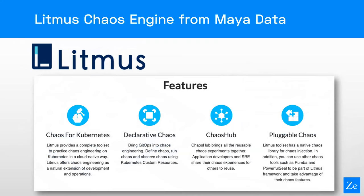Brian did a great job describing Litmus, so I won't go into too much detail. Things I really liked, especially for the demo: the declarative nature — everything is configured by YAML deployed into your Kubernetes cluster, making it repeatable and easy to have a bank of configurations you can run repeatedly the same way every time. Also it doesn't require third-party components. Some other tools require you to set up a separate server to coordinate the chaos engines, which is extra infrastructure to manage. With Litmus, you can deploy everything into your Kubernetes cluster and run it inside the cluster.